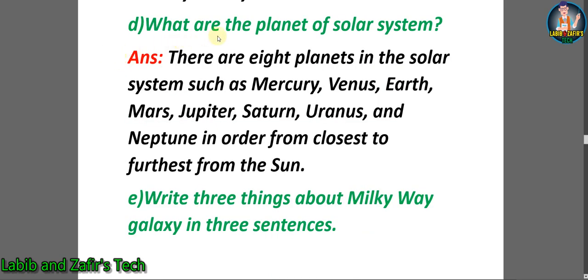Number 4: What are the planets of the Solar System? Answer: There are 8 planets in the Solar System such as Mercury, Venus, Earth, Mars, Jupiter, Saturn, Uranus and Neptune in order from closest to furthest from the Sun.